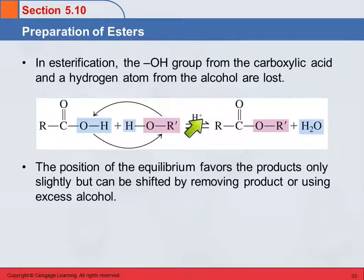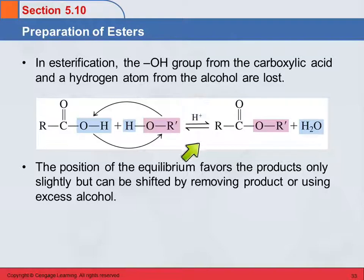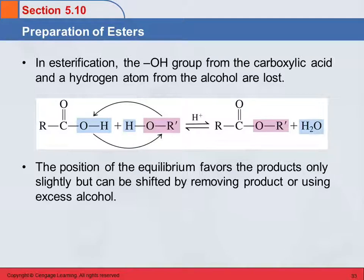Another way to favor the product is by adding more alcohol. The acid is the catalyst — I want to clarify that. If we add more alcohol and increase its concentration, then the equilibrium will shift in a way to decrease that concentration, and to do that, it will shift to the product side.